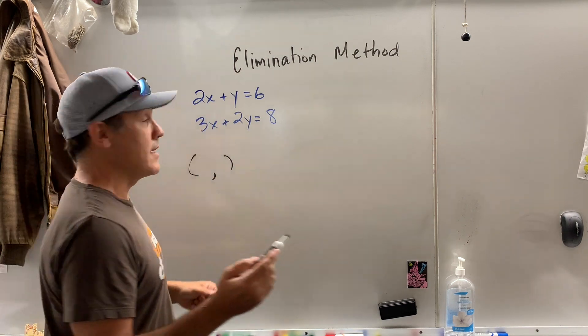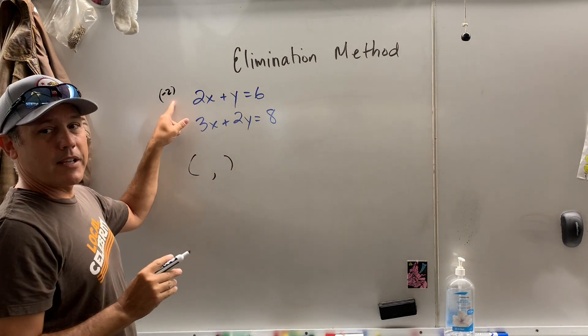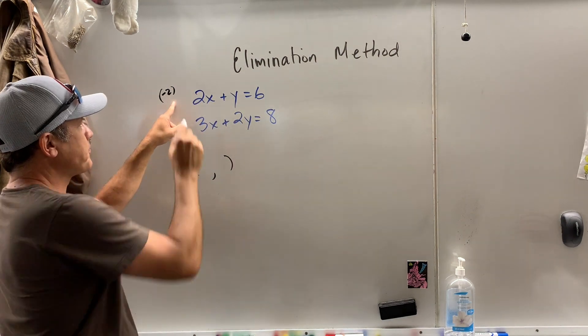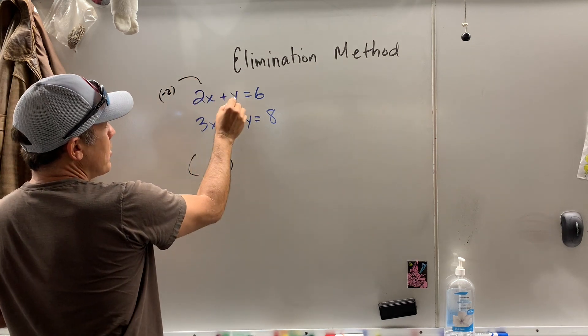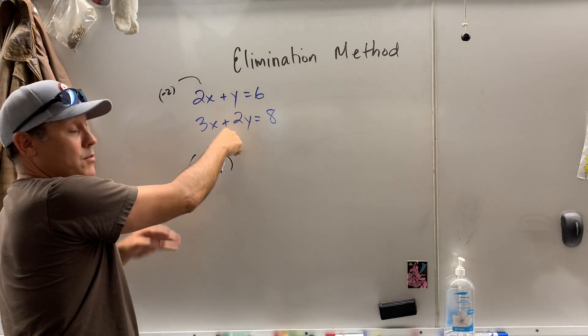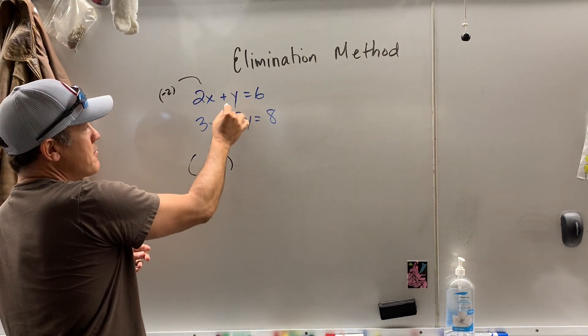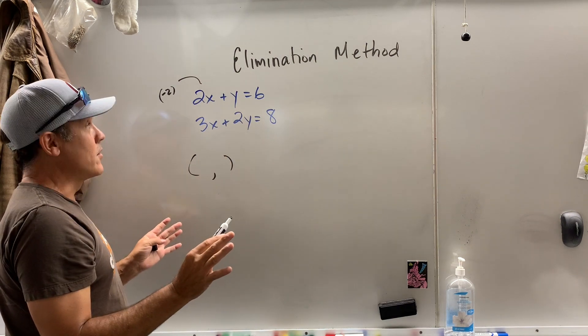Well, I could see it a mile away. If I multiply this bad boy by negative two, and I like putting it off to the side so I follow what I'm doing. If I multiply this by negative two, do you see how negative two y plus two y, it's going to disappear? So you have to have the same number in different signs, and you'll hit a home run every single time.